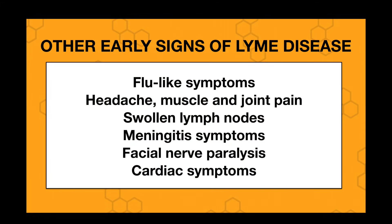There are other early signs of Lyme disease besides the rash, including flu-like symptoms like fatigue, fever, chills, headache, and muscle aches, joint pain, and swollen lymph nodes near the area of the bite. There may also be some serious issues like meningitis symptoms such as headache and neck stiffness, facial nerve palsy where you can't move part of the face, and carditis or heart inflammation that causes EKG changes, chest pain, and feelings of palpitations. These may come on around the same time as the rash or take a little bit longer to show up.